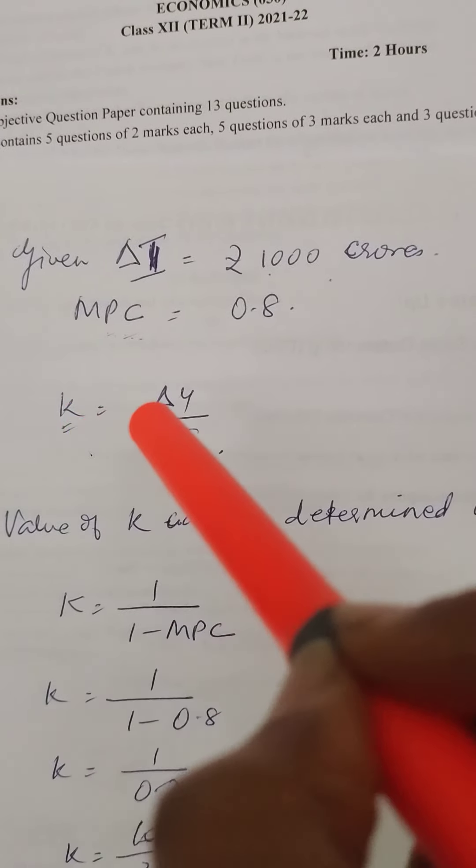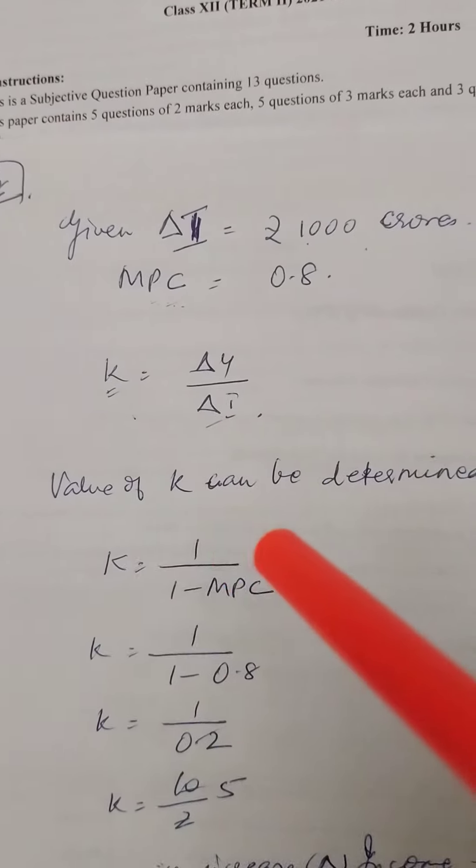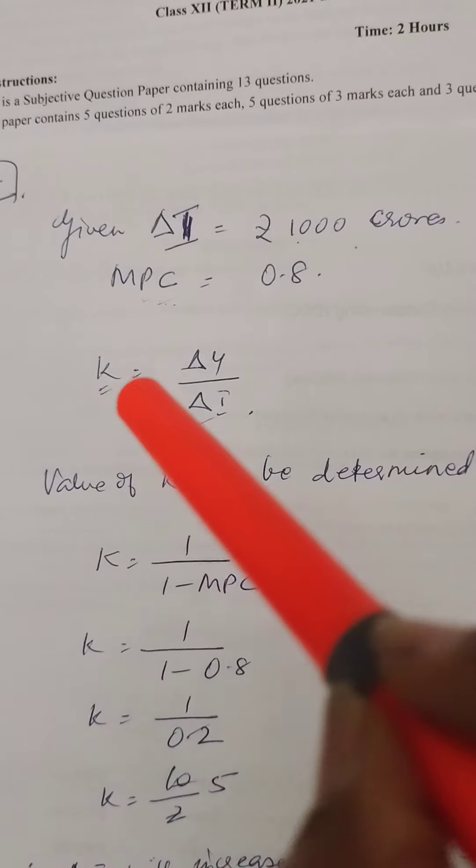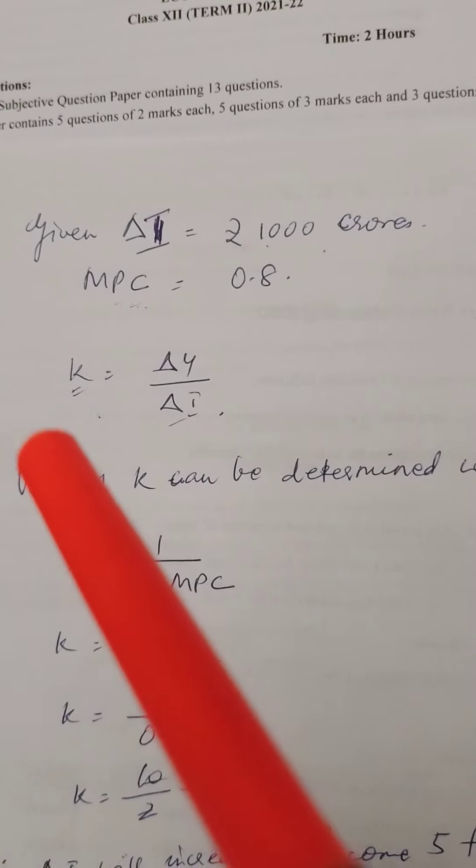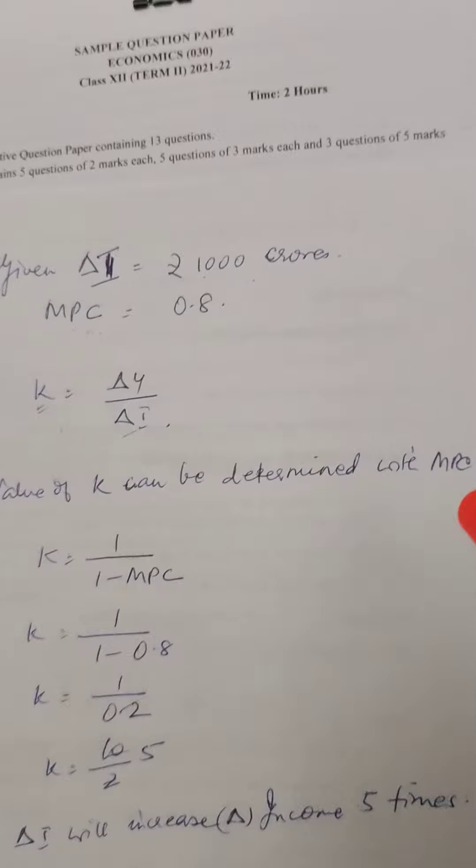K, that is multiplier, = change in Y upon change in I. We don't have the value for K, but this can be found out because MPC is given. Value of K can be determined with MPC.